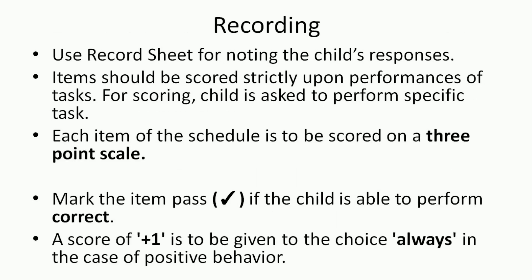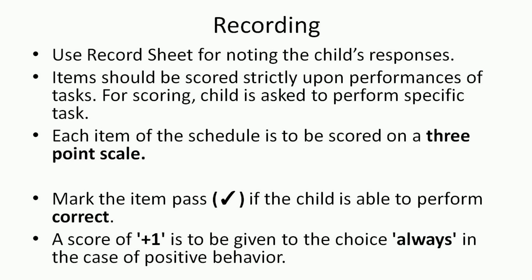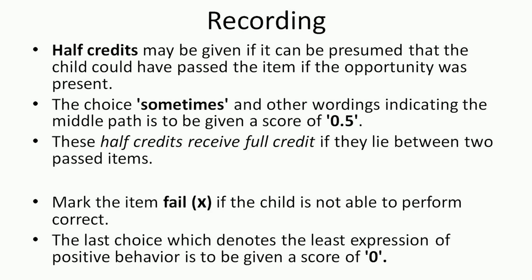Now let's look at the recording part — how to record the responses. To record the responses, you have to use the record sheet for noting the child's responses. Items should be scored strictly upon the performance of the task, and the child is asked to perform a specific task. Each item in the booklet is to be scored on a three-point scale. First, you mark the item pass — you place a tick before the statement if the child is able to perform correctly, and a score of plus one is given for positive behavior.